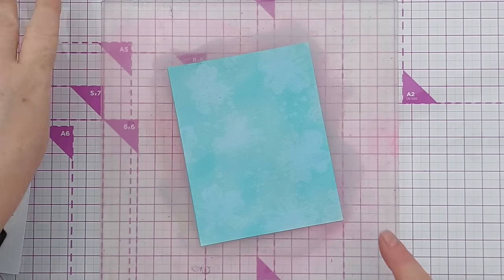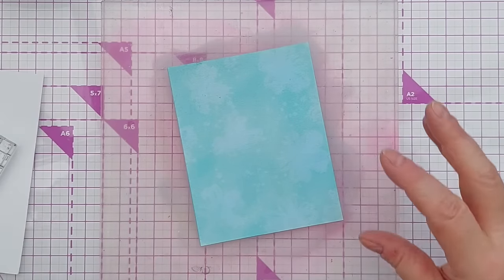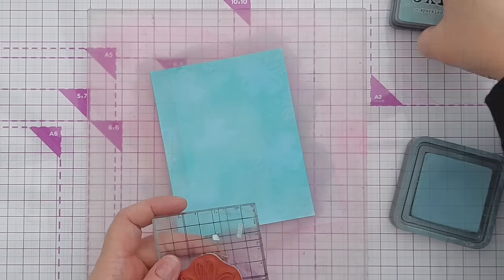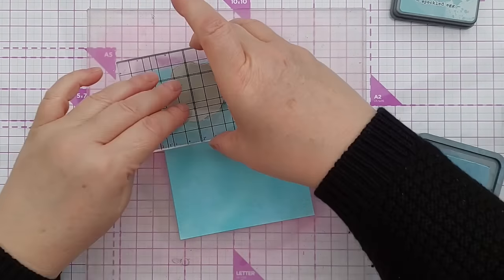You can see how it's lifted up the color and you've still got the essence of a flower shape there. I've dried off my stamp now and I'm going to stamp on my Speckled Egg first. This is just going to be another faint flower in the background.